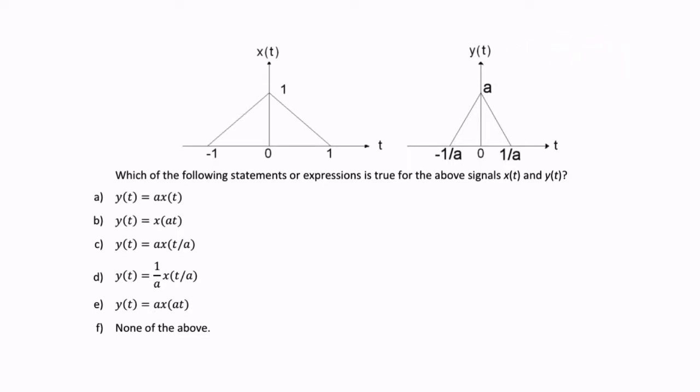So, two things are going on here. There's something happening with the amplitude. Something's happening to the amplitude, so there's some kind of scaling happening in the vertical direction. And something's happening here. So, there's also some kind of scaling. This is being stretched or compressed. So, we have two forms of scaling going on.